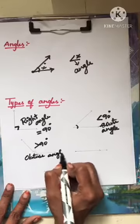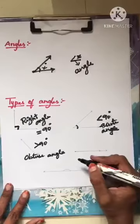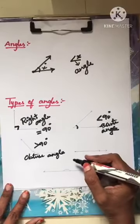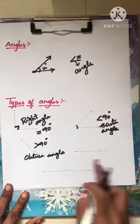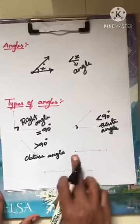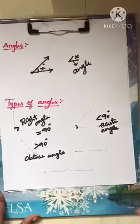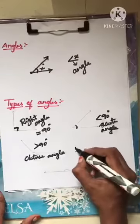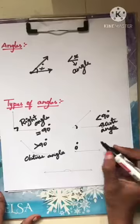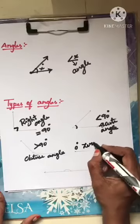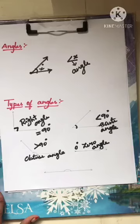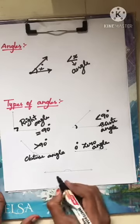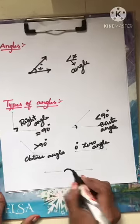Here there is no angle measured because one ray falls on top of the other — it lies one on the another. So there is no degree; it is said to be 0 degrees. When the ray lies one on another, we call it a zero angle.